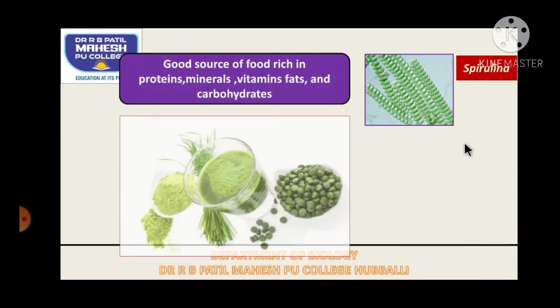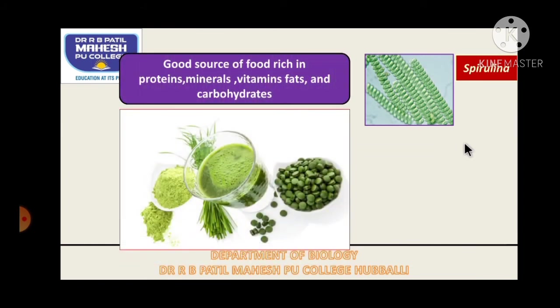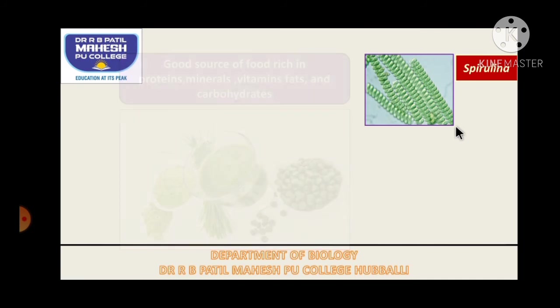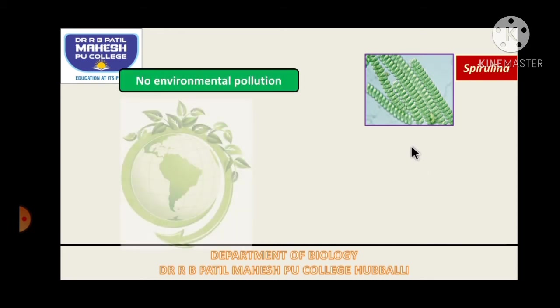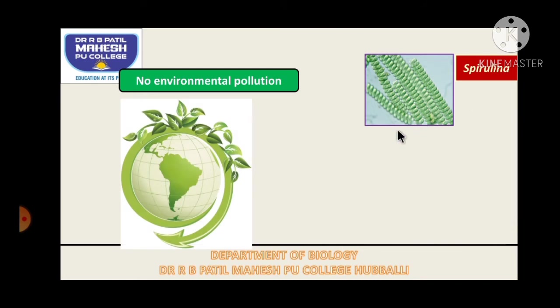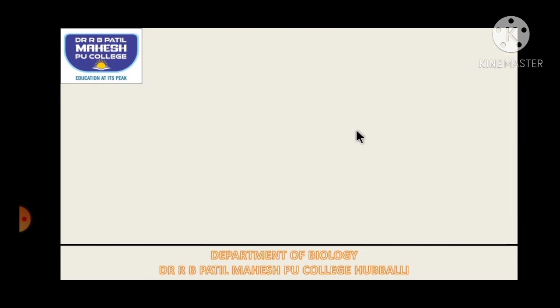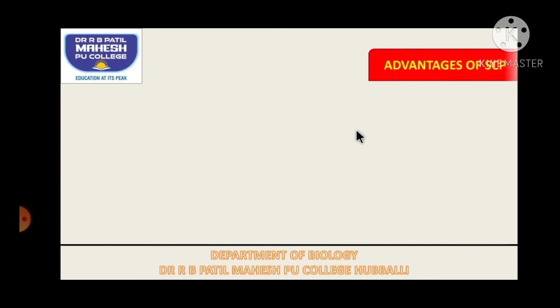Spirulina is a rich source of proteins, minerals, vitamins, fats, and carbohydrates, and has very few calories. Similar to Revital energy capsules in allopathy medicine, Spirulina is given to a person suffering from protein deficiency. All these organisms will not cause any environmental pollution, so they are eco-friendly.